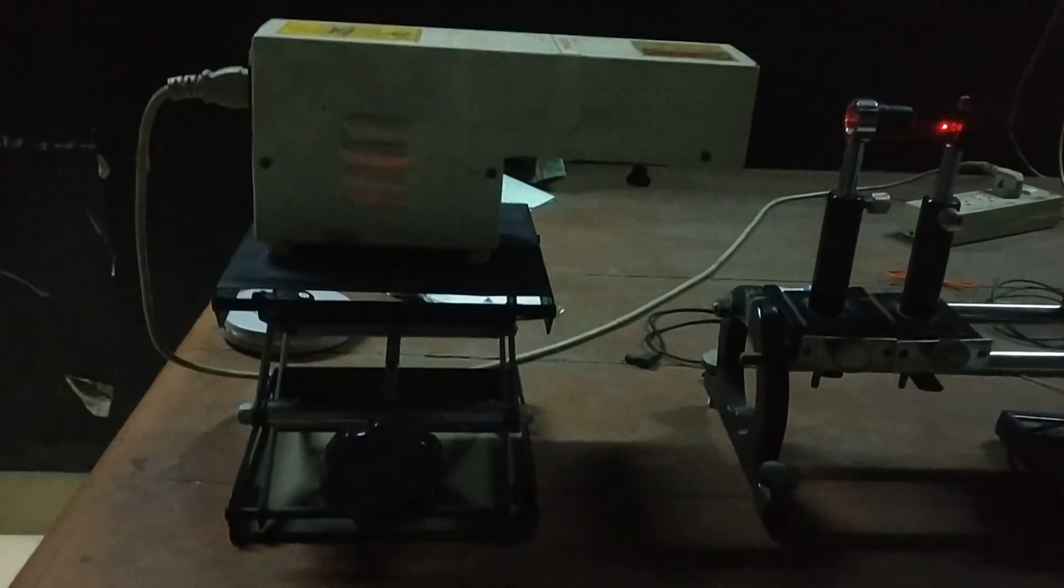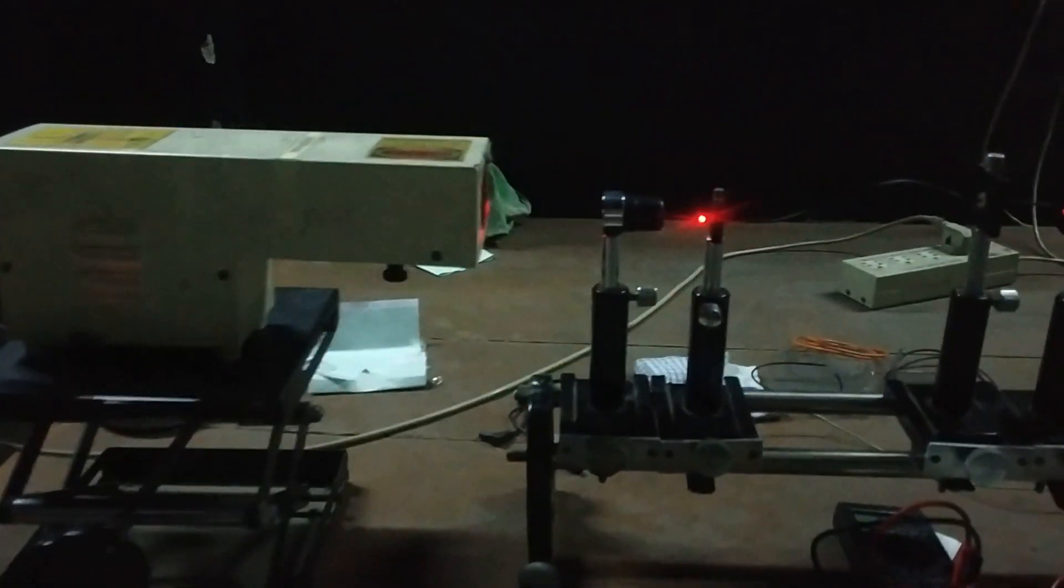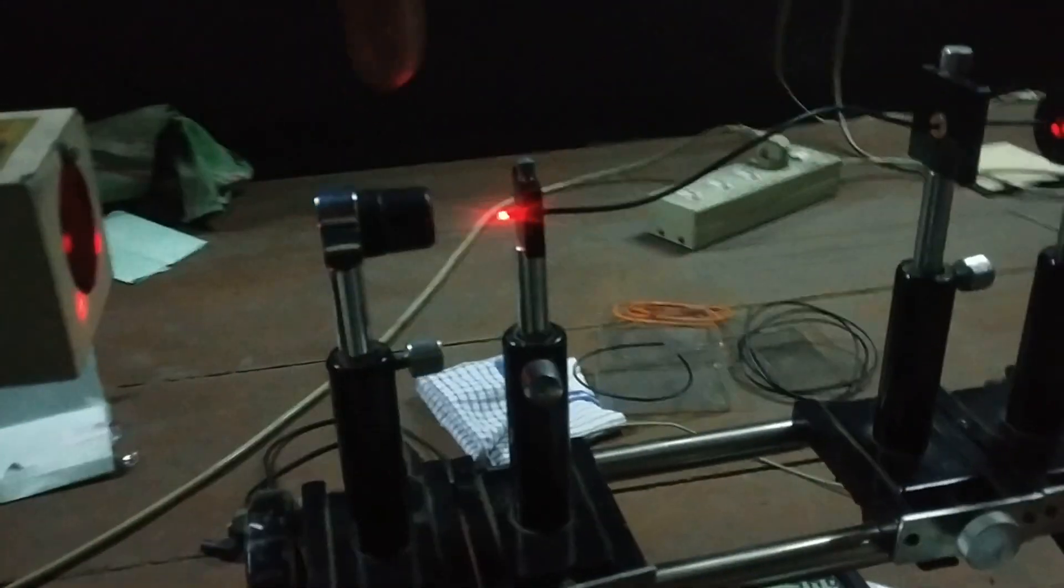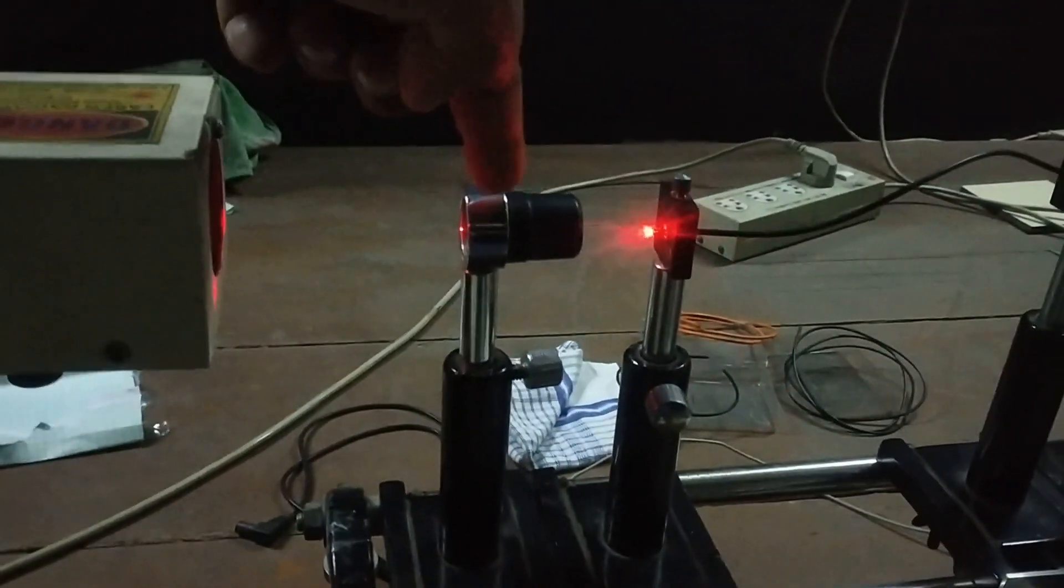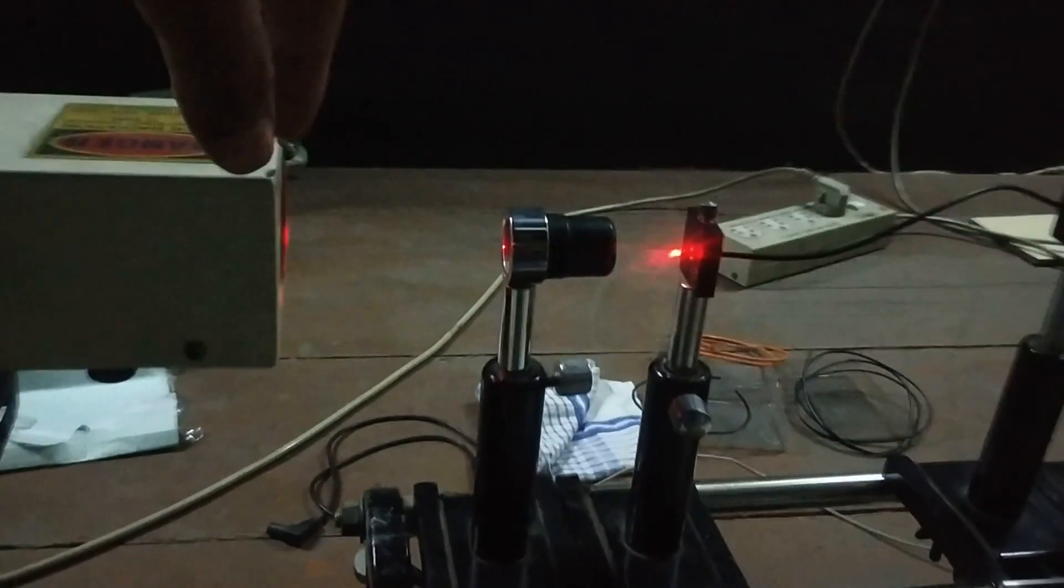Let me show you, this is the main unit with this helium neon laser placed on a jack. The position of this helium neon laser can be adjusted with the help of a jack. This is a converging lens.